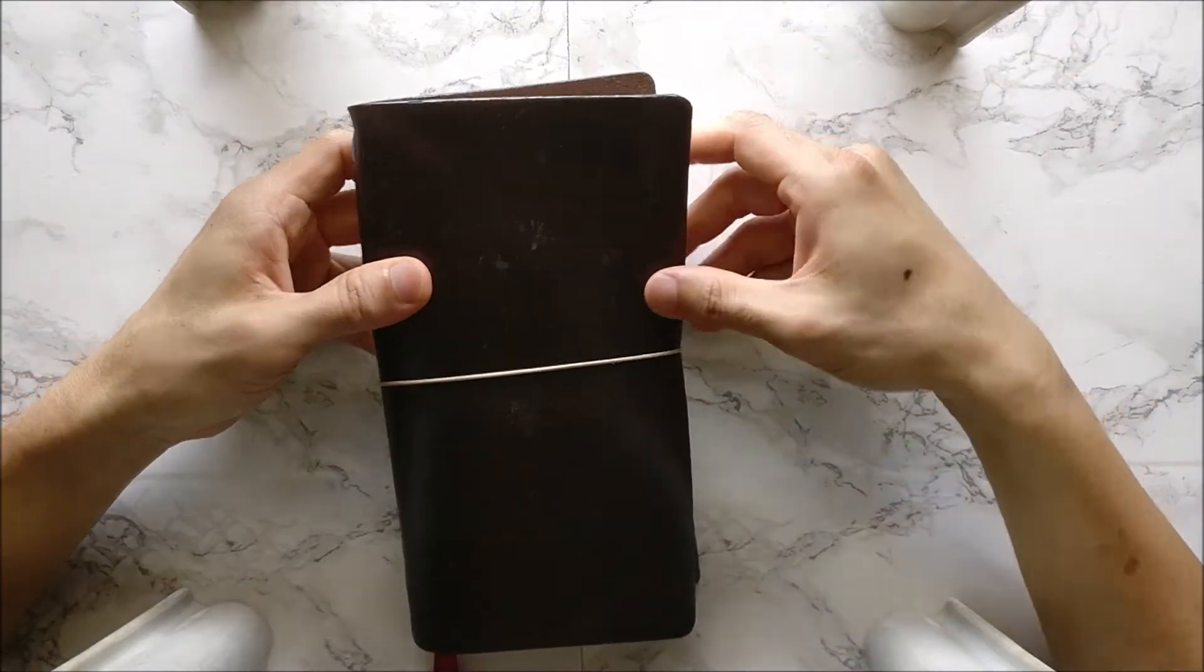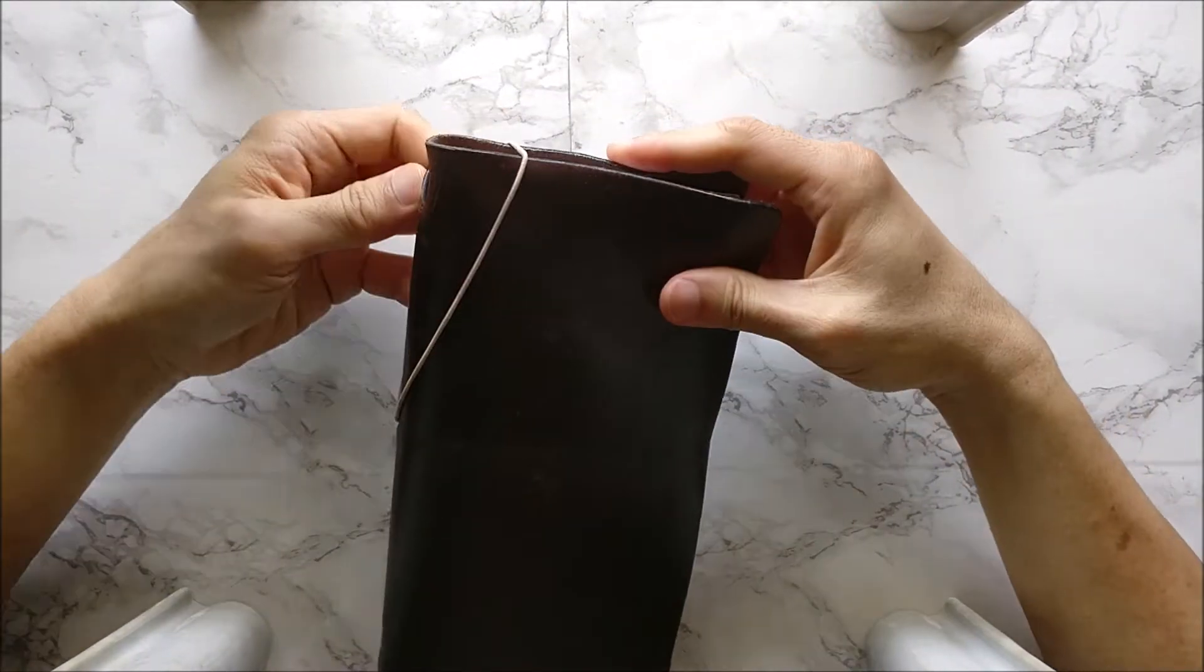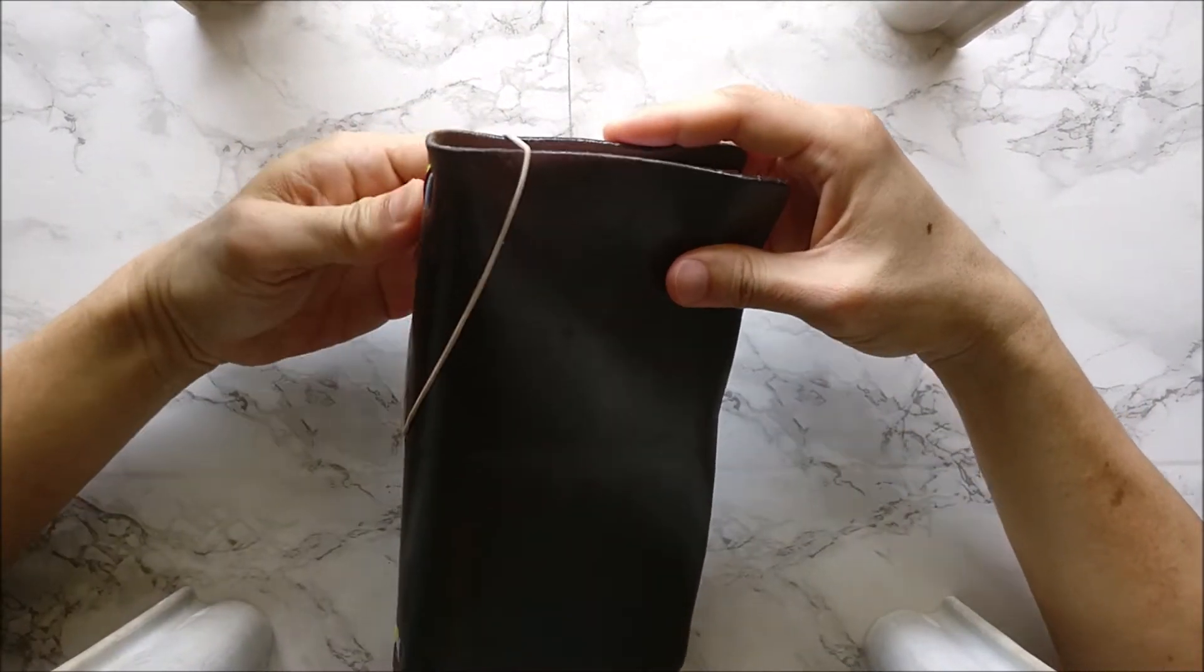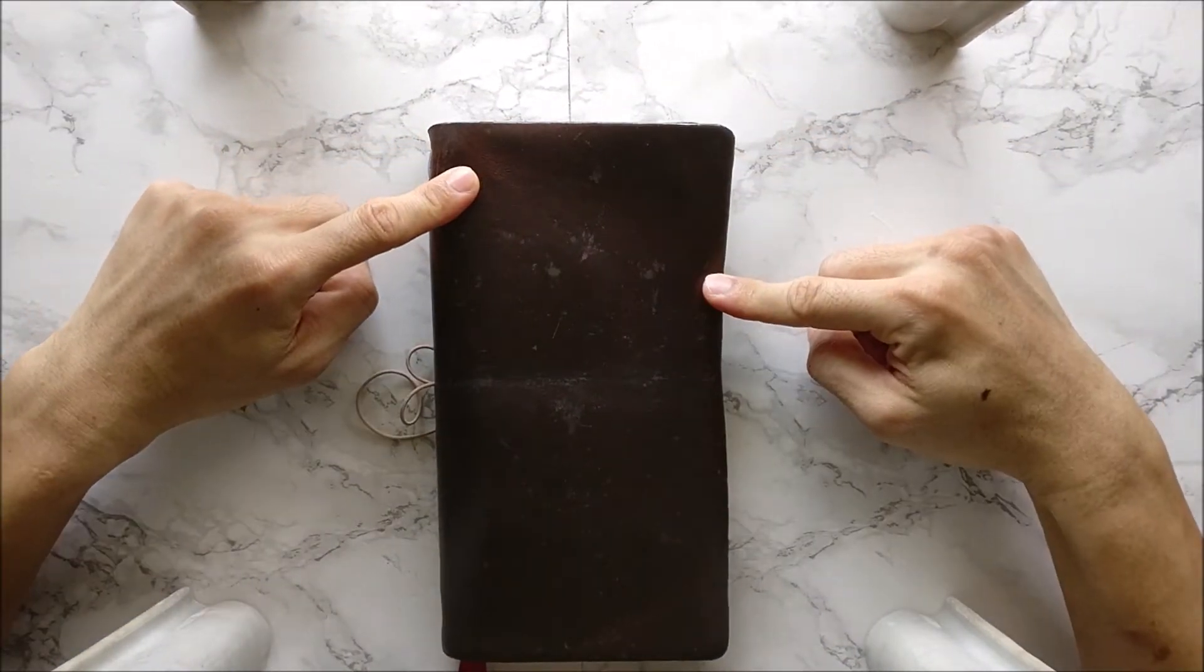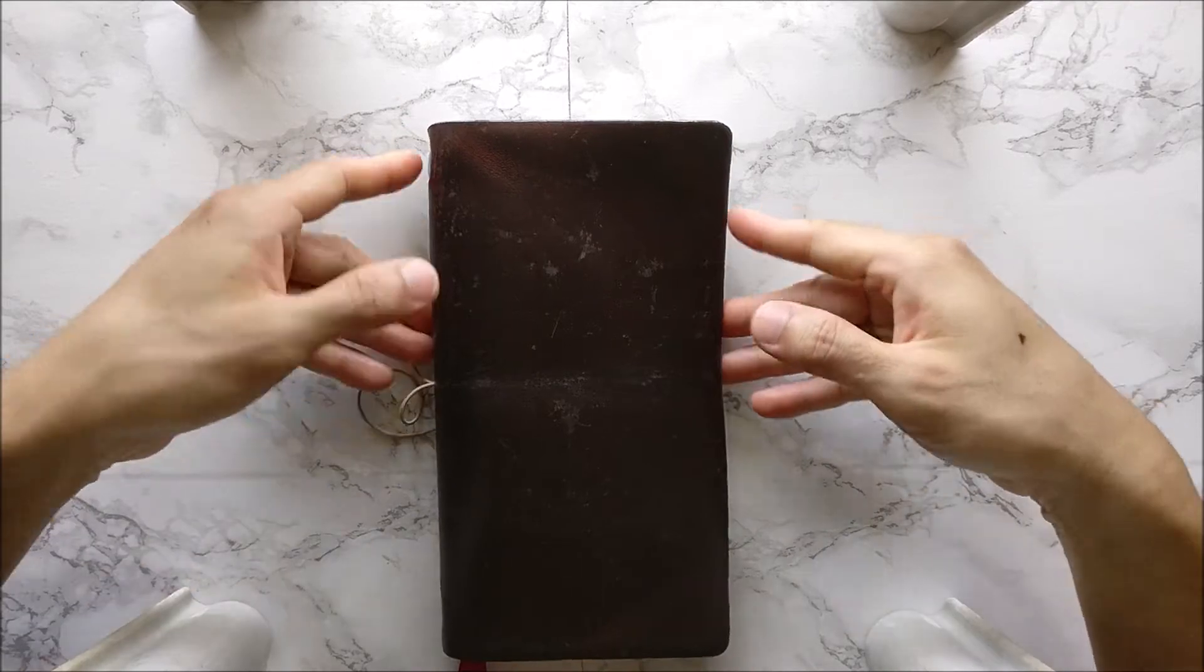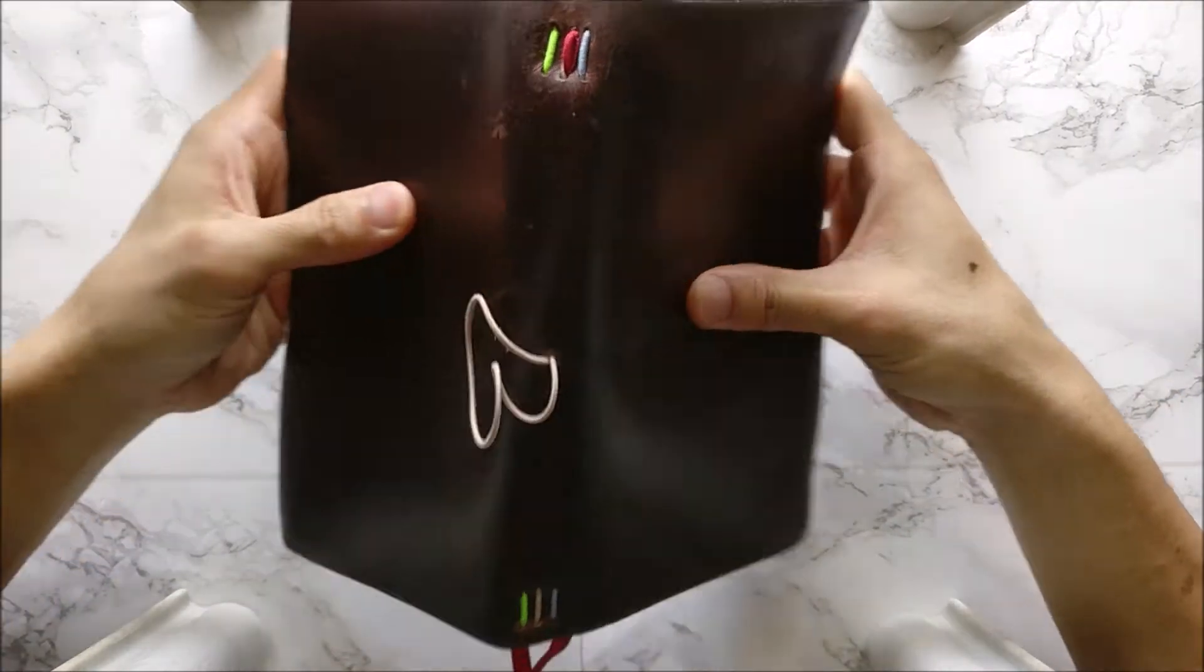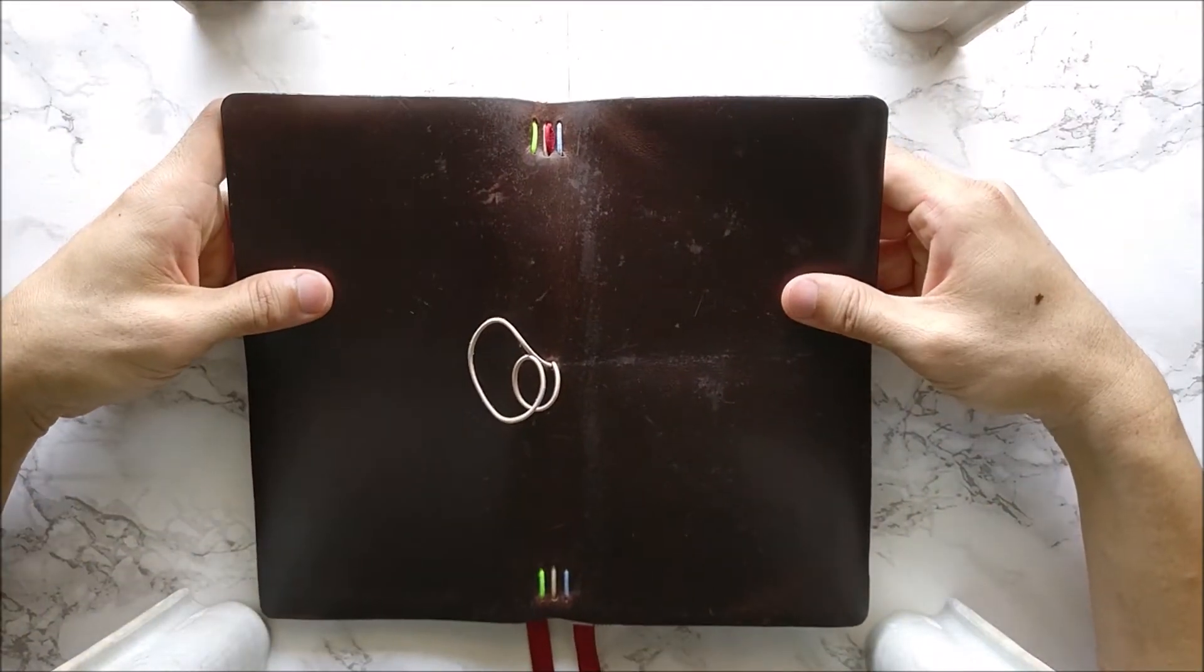Okay, so this is a custom made traveler's notebook that I have it done in a lettersmith at Queensway Shopping Centre. The lettersmith is called Franks. I got this for $39. So, to open it up, this is how it looks.